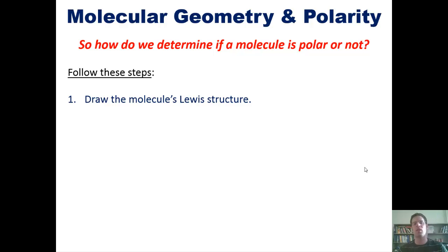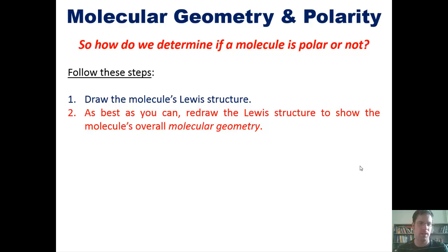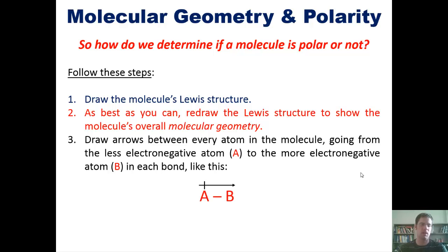One, we draw the molecule's Lewis structure. Two, as best as we can, we redraw the Lewis structure to show the molecule's overall molecular geometry. Three, we draw arrows between every single atom in the molecule going from the less electronegative atom A to the more electronegative atom B in each bond like this. And four, we answer the truck question, which I'll explain by using our next example.